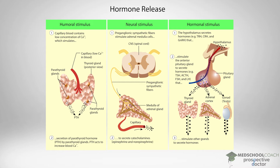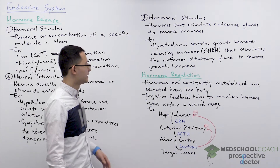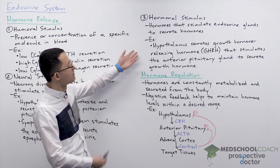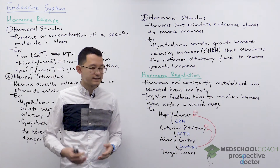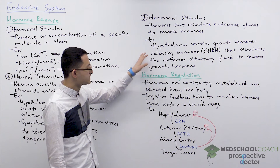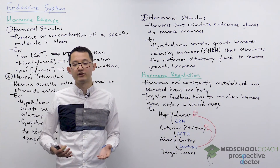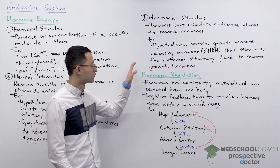Some other examples include TRH (thyrotropin releasing hormone), which is released from the hypothalamus and stimulates the anterior pituitary gland to release TSH (thyroid stimulating hormone), which acts on the thyroid gland to release the thyroid hormones. Another example, not shown in the diagram, is that the hypothalamus also releases growth hormone releasing hormone, which stimulates the anterior pituitary gland to release growth hormone.